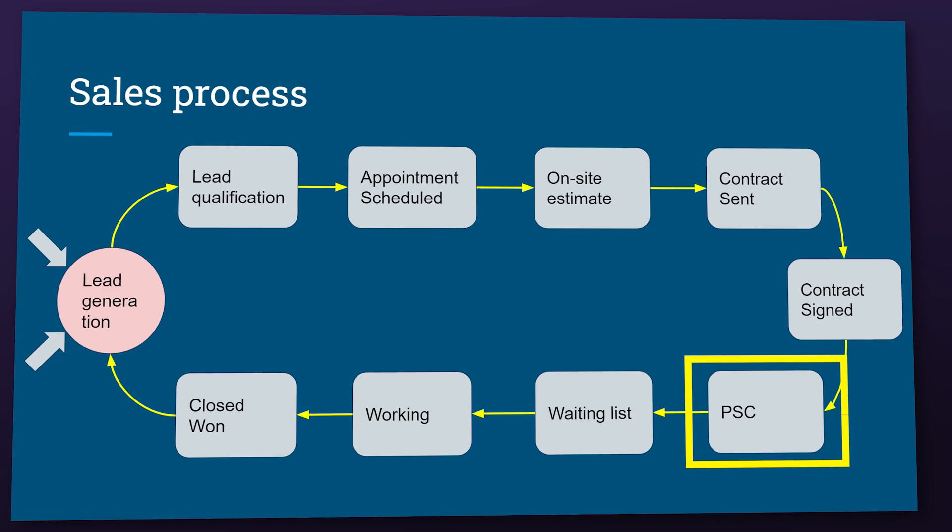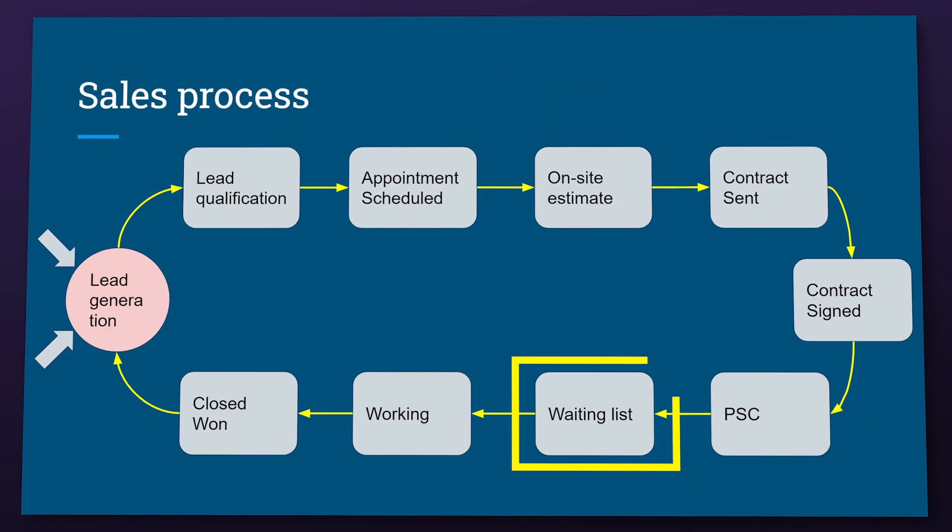Next is the project success call. This stage is part of the onboarding process but it is still in our sales process. We schedule a call with the customer to go over a lot of details about the project and work to be performed. Next is the waiting list. Once the project success call is completed, we move the deal to the waiting list so operations can take care of the jobs in the order they came in. We also send emails introducing the client to operations.